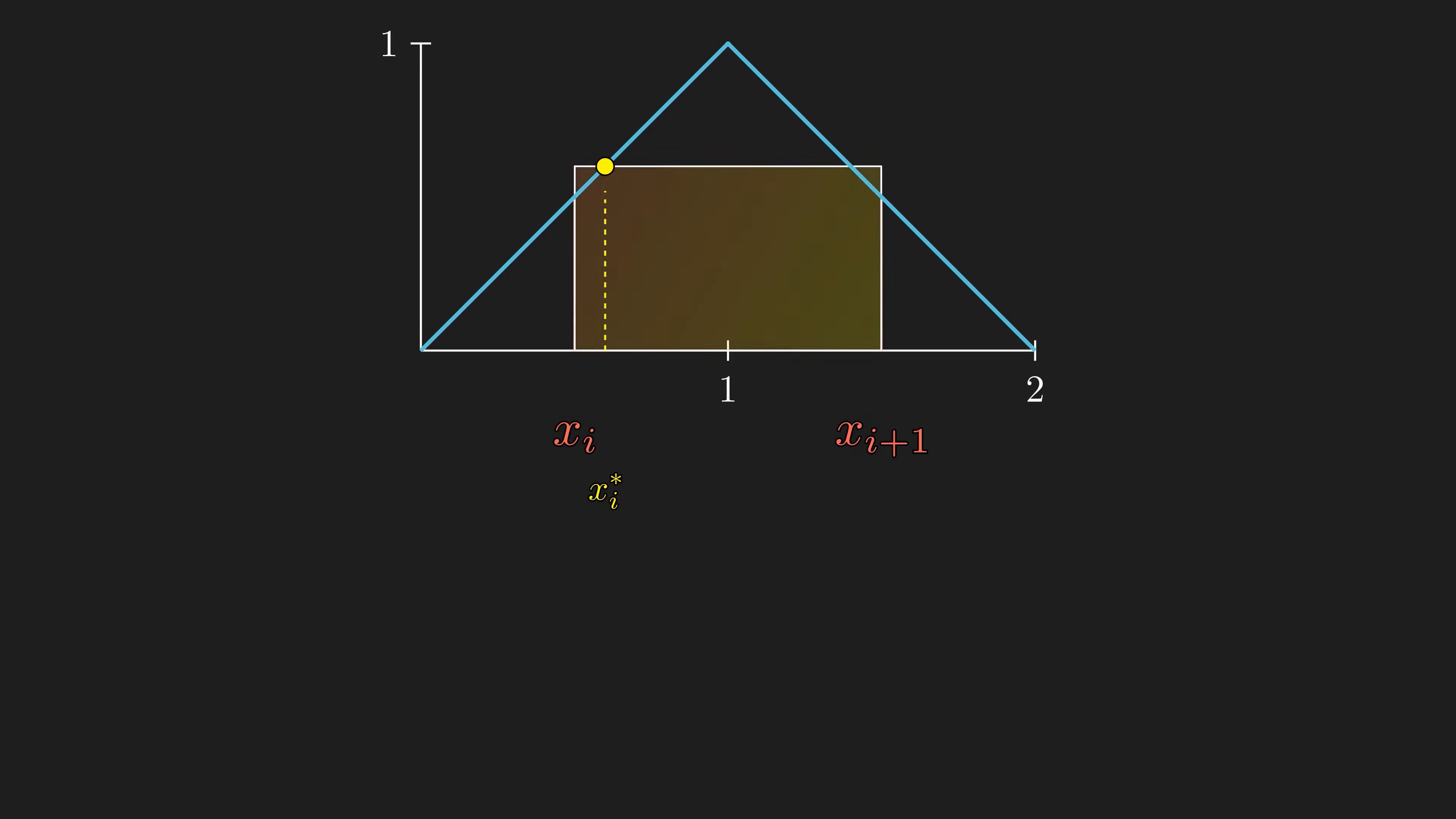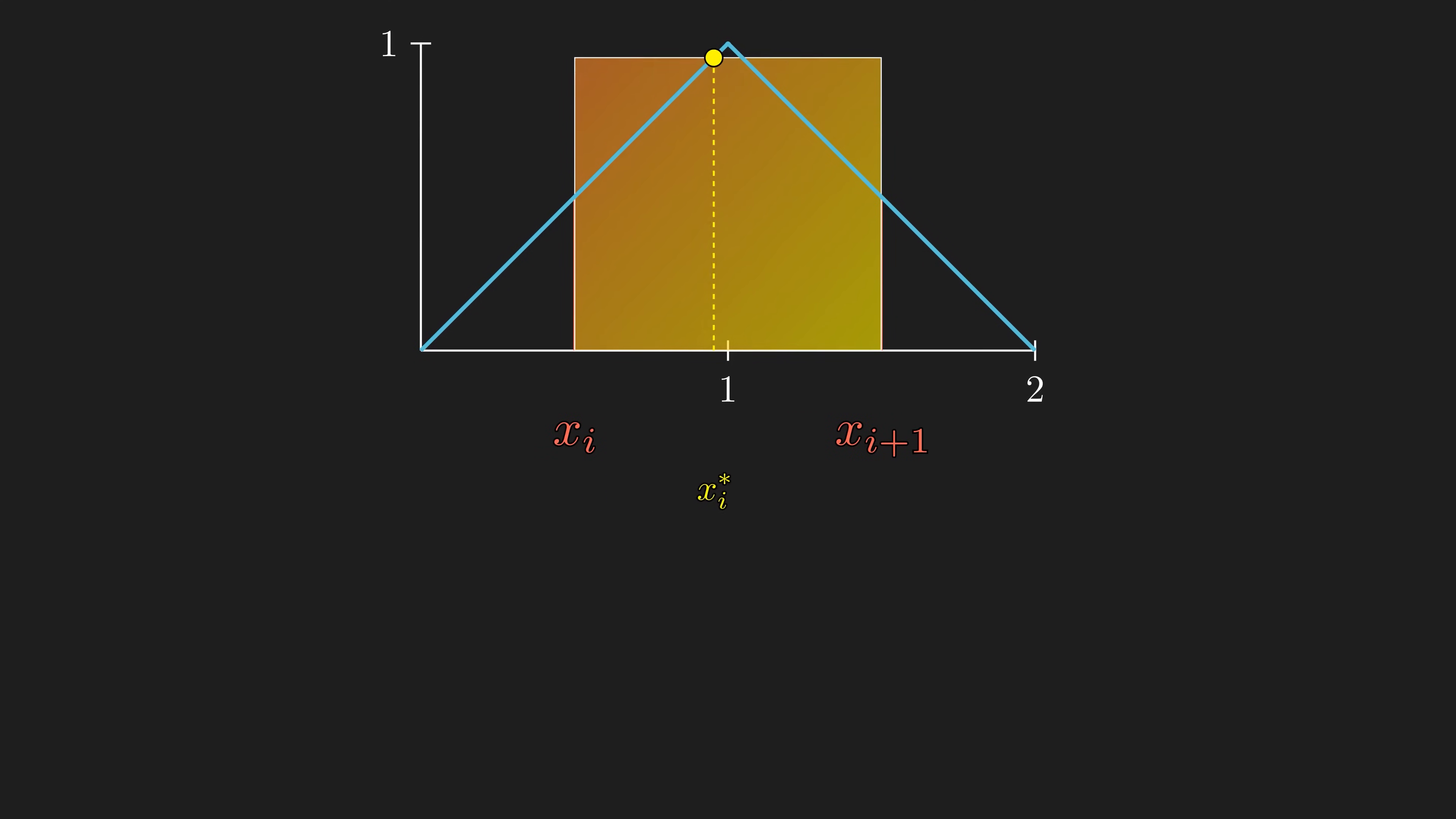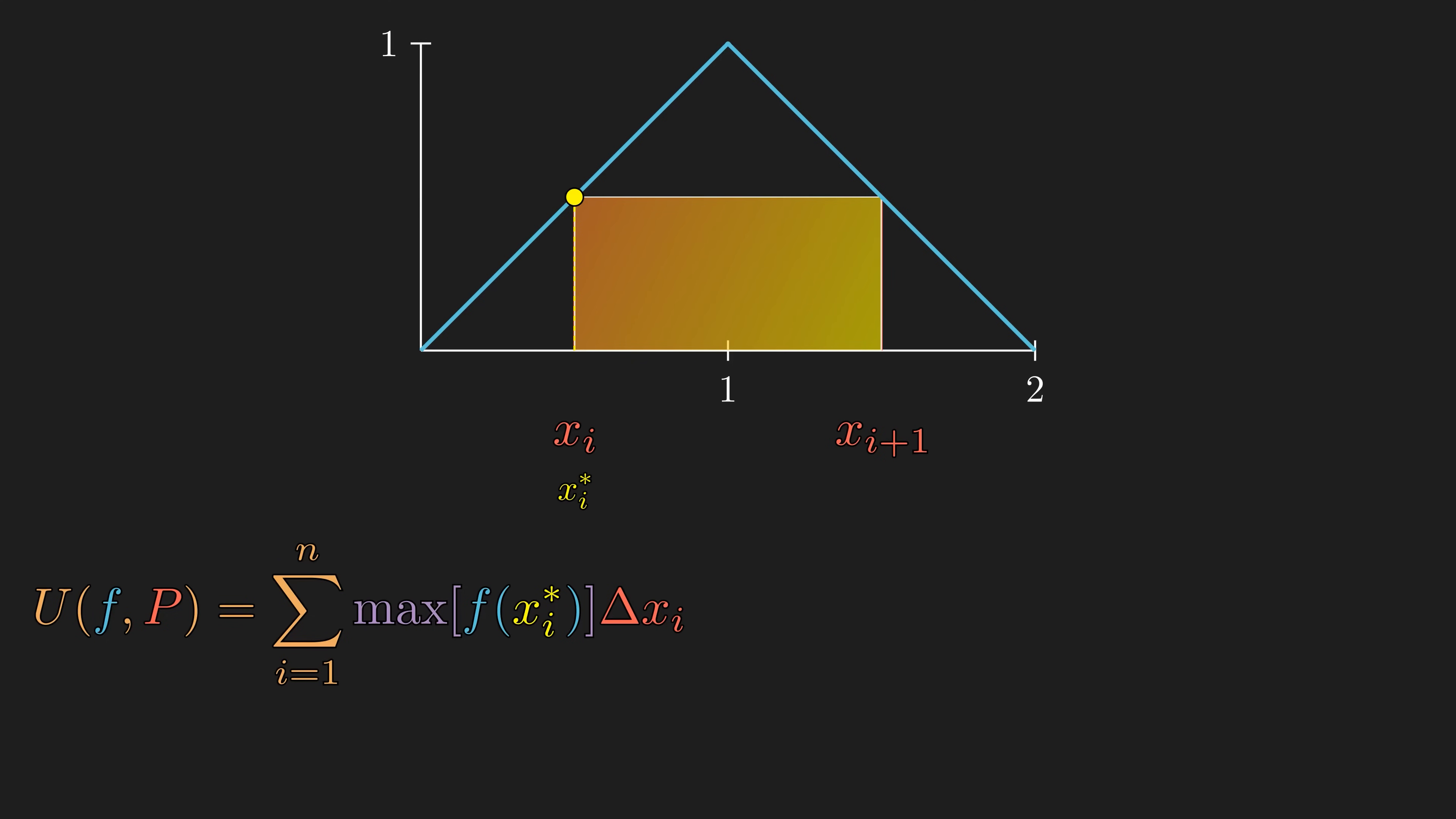For any partition, let's take a look at just one subinterval. We can possibly choose a tag that maximizes the height of the rectangle, or minimize it. Then, we have the upper sum of a partition, which is the sum of the biggest possible rectangles for each subinterval. Similarly, we can define the lower sum.